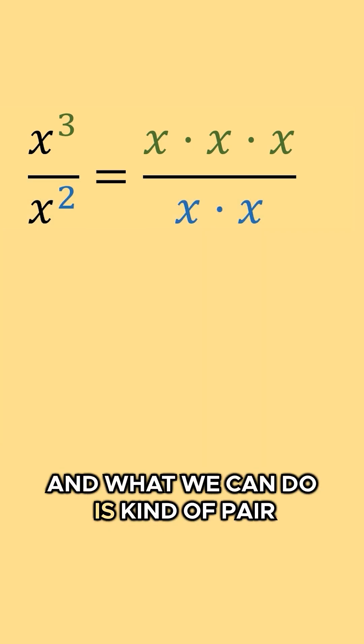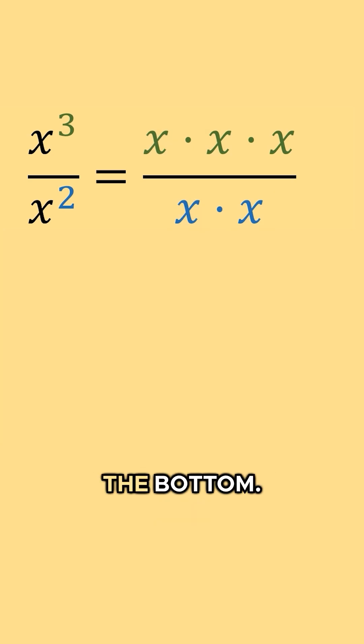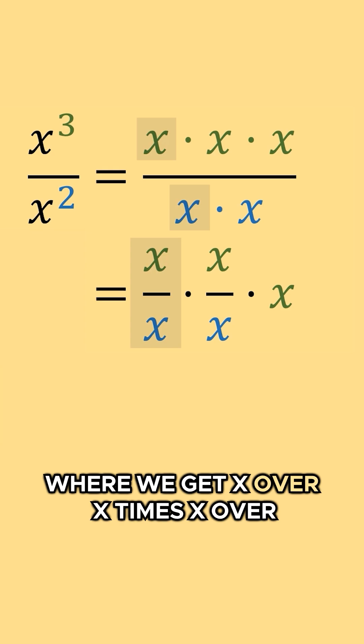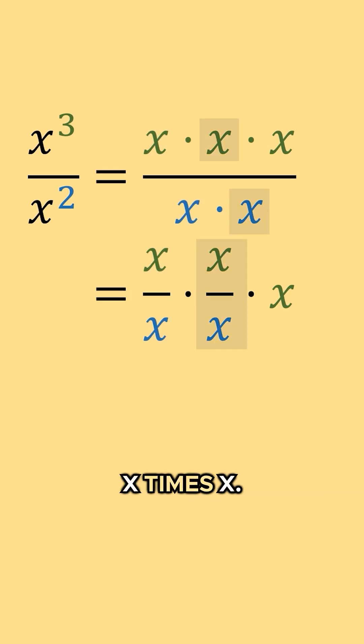And what we can do is kind of pair one x on the top with one x on the bottom, and we end up getting this next line here where we get x over x times x over x times x.